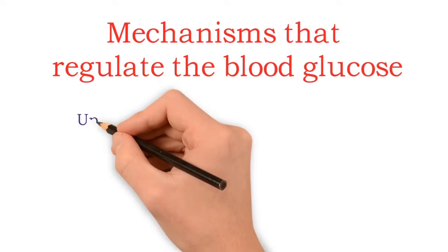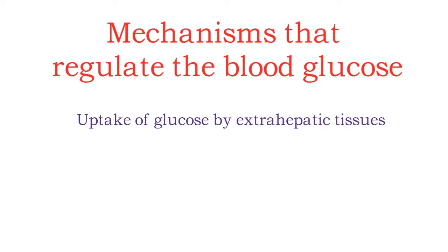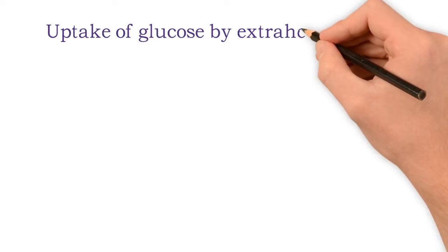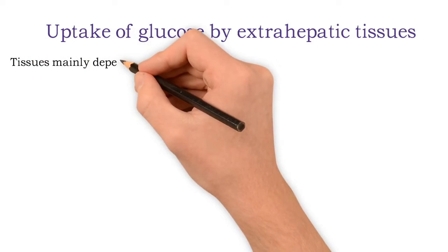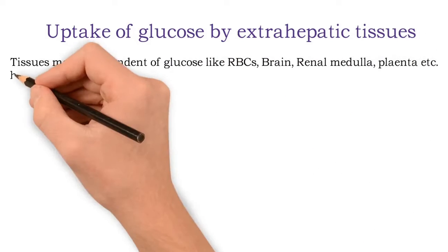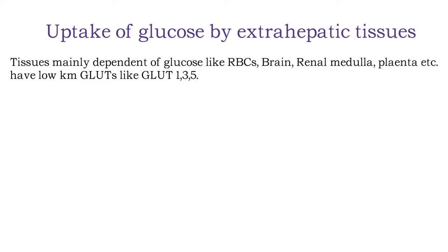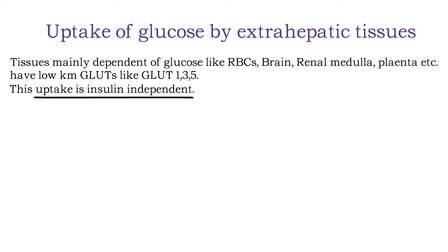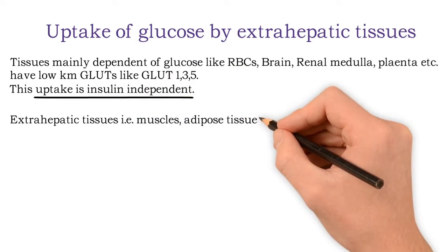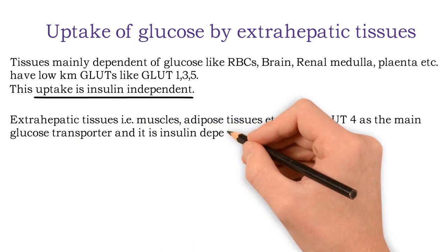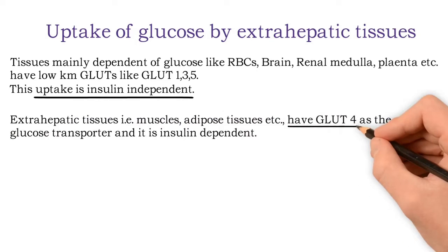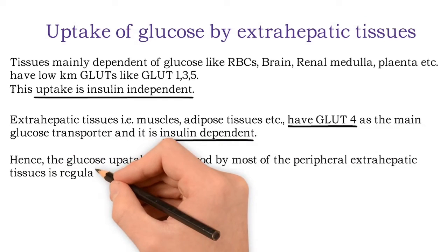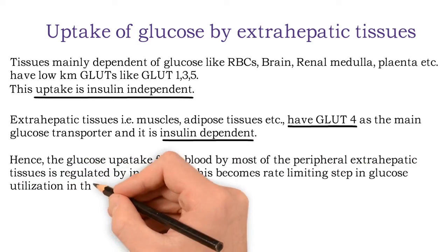The mechanisms that regulate blood glucose level include uptake of glucose by extra-hepatic tissues, role of the liver, and role of hormones. Tissues mainly dependent on glucose — like RBC, brain, renal medulla, and placenta — have low KM glucose transporters like GLUT1, 3, and 5, and this uptake is insulin independent. Extra-hepatic tissues like muscle and adipose tissue have GLUT4 as the main glucose transporter, and it is insulin dependent. Hence, glucose uptake from blood by peripheral extra-hepatic tissues is regulated by insulin, and this becomes the rate-limiting step in glucose utilization in the absence of insulin.